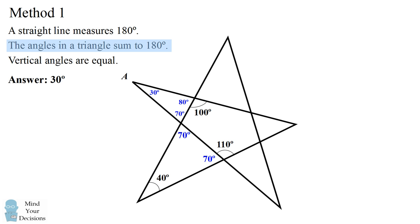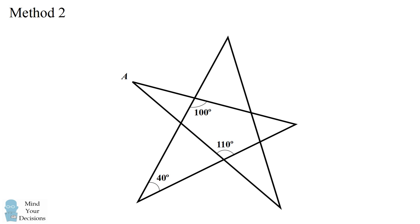There is in fact a quicker way to solve this problem. You only need to use one principle which is that the angles in a triangle sum up to 180 degrees. The trick is to look at the correct triangles.